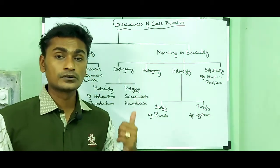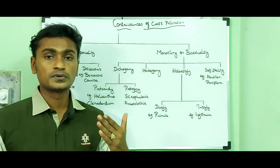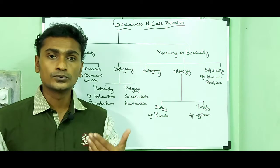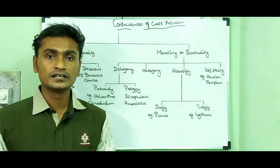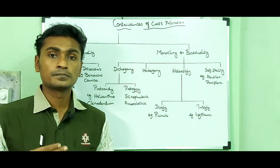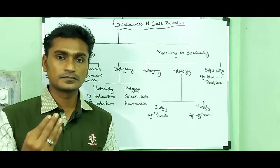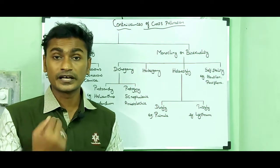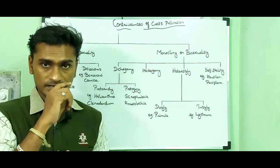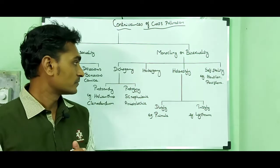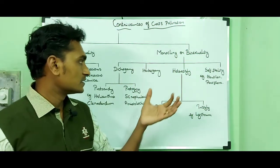Examples of Herkogamy: Gloriosa superba (known as Konvai poo) and Hibiscus (known as Sembaruthi poo).